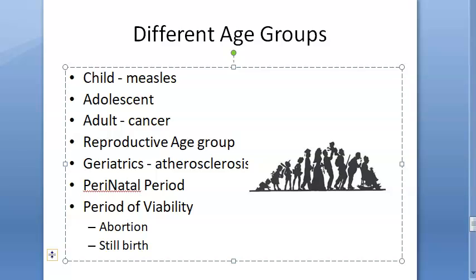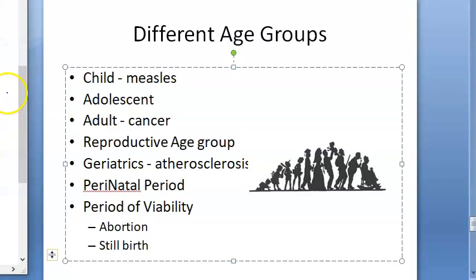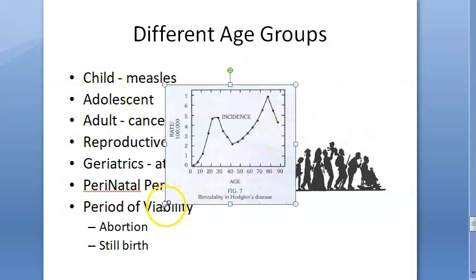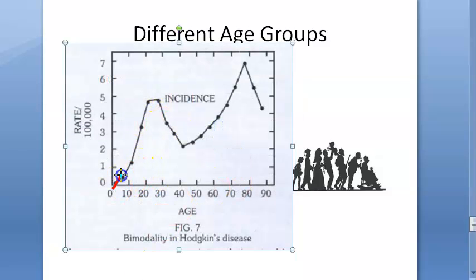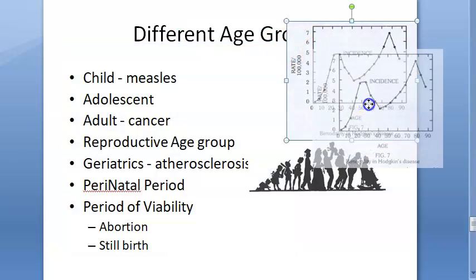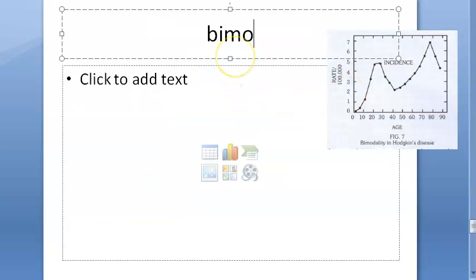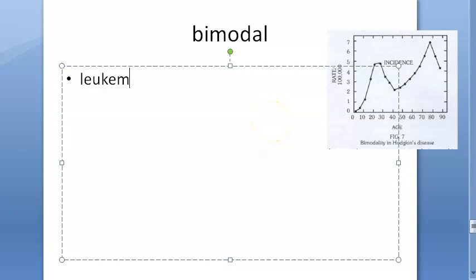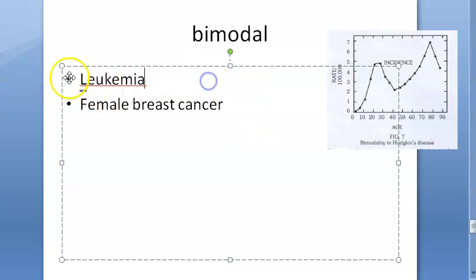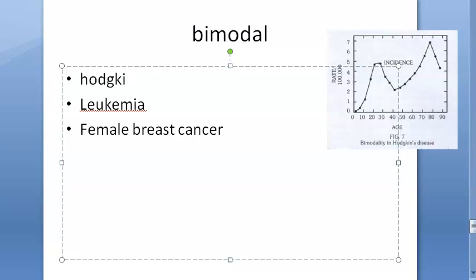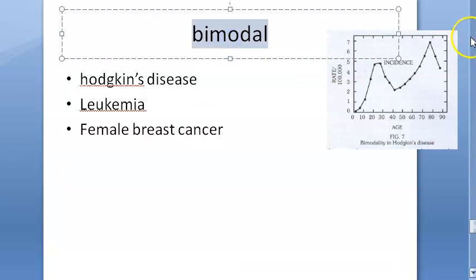Some diseases have bimodal distribution — they occur in young and old but not in between. For example, bimodal variation in Hodgkin's disease: at age 25-30 they have it, and then again around age 80. Both young people in their 20s-30s and elderly in their 80s can be seen with Hodgkin's disease. Bimodal distribution is also seen in leukemia and female breast cancer.